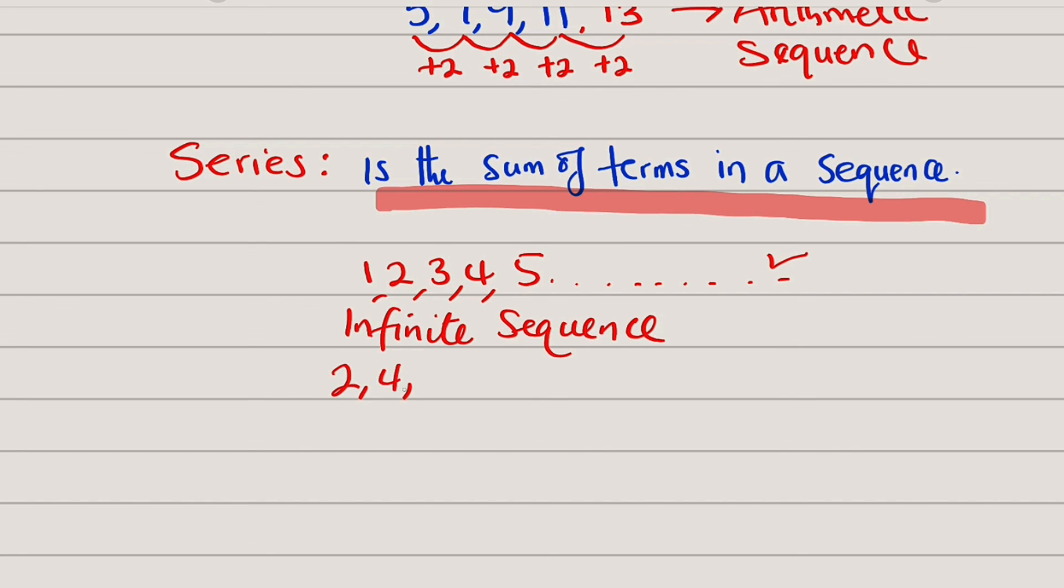Example of a finite sequence. You have 2, 4, 6, 8, 10. You stop. Without adding these dot dots, it means that these sequences are countable and they are referred to as finite.